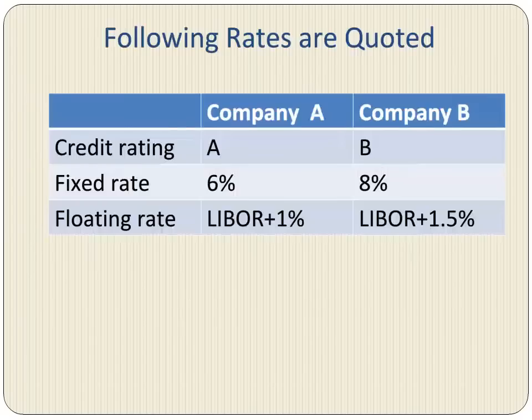Let's take a look at the rates investors expect the two companies to pay. Company A has a credit rating of A and its annual fixed rate of borrowing is 6%, whereas its floating rate of borrowing is LIBOR plus 1%. Company B on the other hand has a credit rating of B, therefore its annual fixed rate of borrowing is 8%, whereas its floating rate of borrowing is LIBOR plus 1.5%.